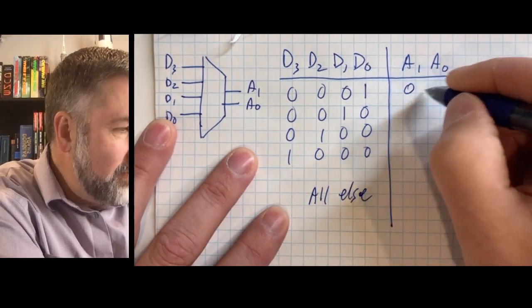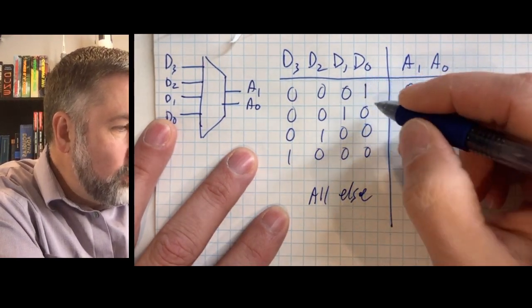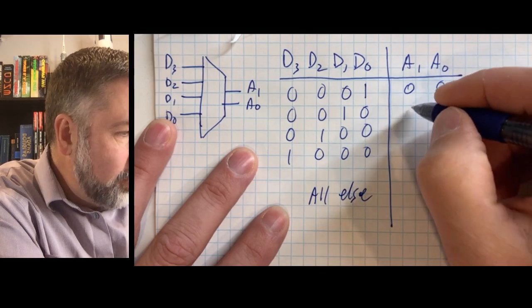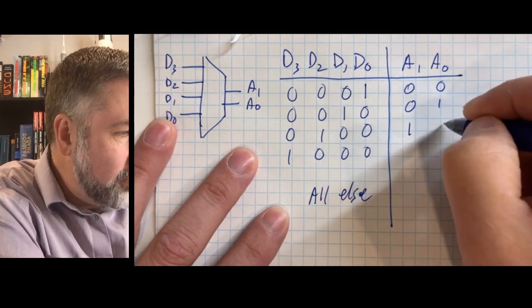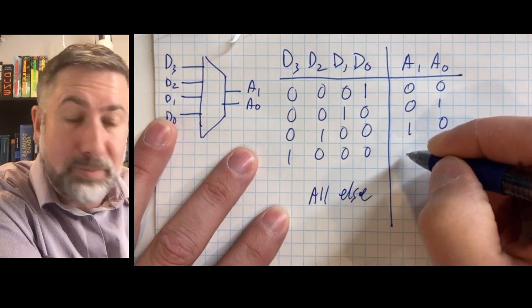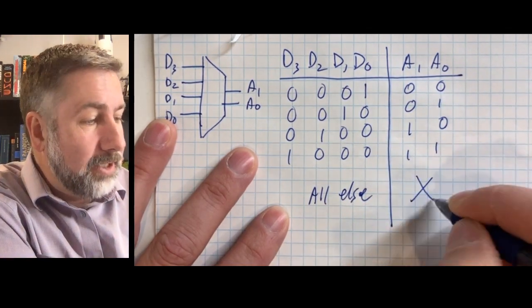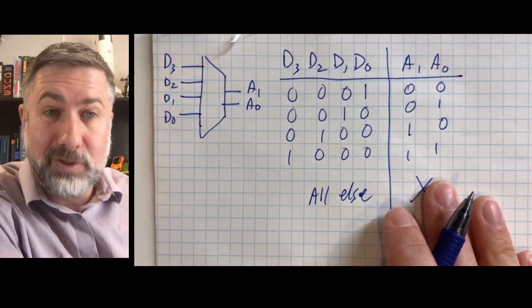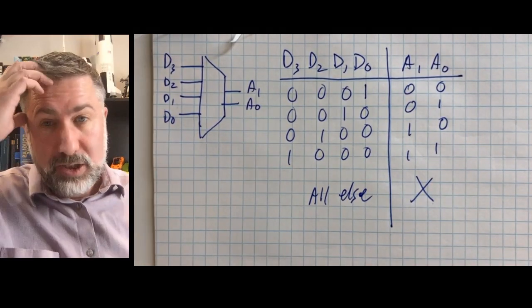So if D0 is active, the output should be 0,0. If D1 is active, the output should be 0,1. If D2 is active, the output should be 1,0. If D3 is active, the output should be 1,1. And for everything else, it's a big old don't care, which is going to make the result of this super easy.